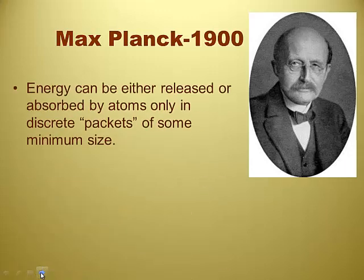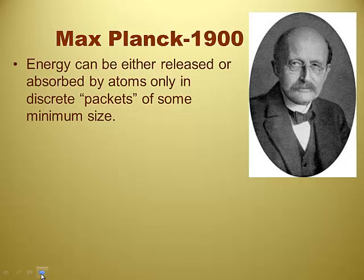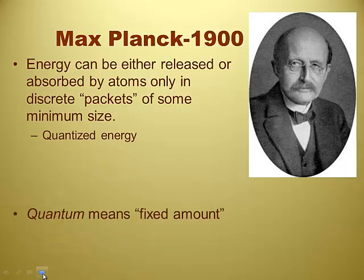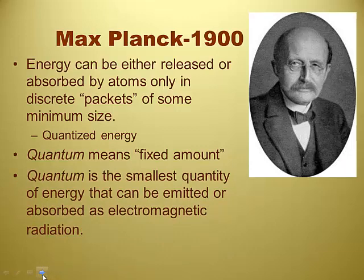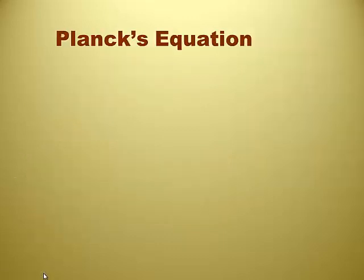Fifty years later, Max Planck. Energy can be either released or absorbed by atoms only in discrete packets of some minimum size. So in other words, energy is chunks. Right. So it's quantized energy. Quantized energy. Little chunks of energy, not a continuous stream. And that makes sense because the word quantum means a fixed amount. When I hear the word quantum, I think quantity. Right. A quantity of energy. It's a quantity of energy. So he defines a quantum as the smallest unit of energy that can be emitted or absorbed as electromagnetic radiation. So the least amount to get those colors and those wavelengths. Exactly. And we haven't even seen those colors yet. But everything, every atom gives off a different bit of light. Different colors of light.